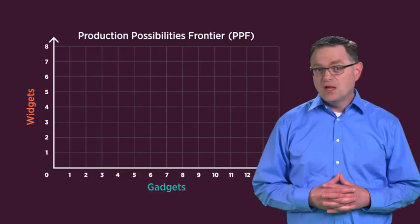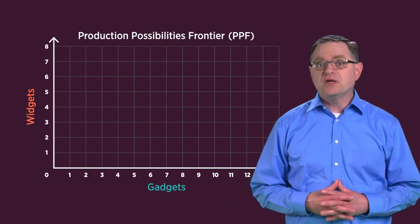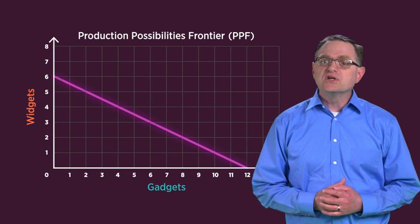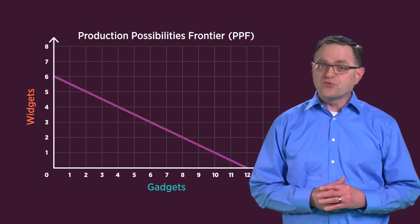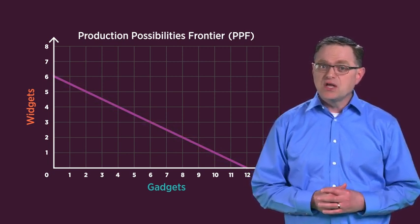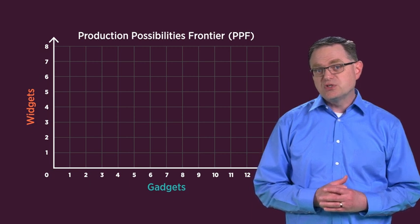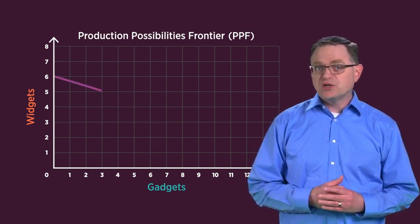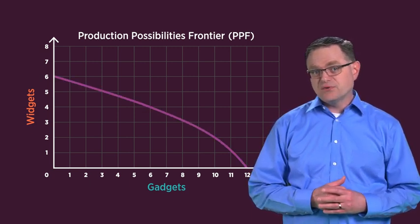Our final lesson focuses on the shape of the frontier line. Up to this point, we've graphed the PPF as a straight line. However, a straight line doesn't best reflect how the real economy uses resources to produce goods. For this reason, the frontier is usually drawn as a curved line that is concave to the origin.